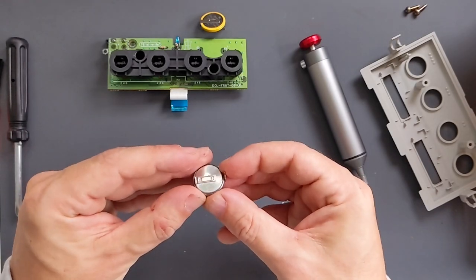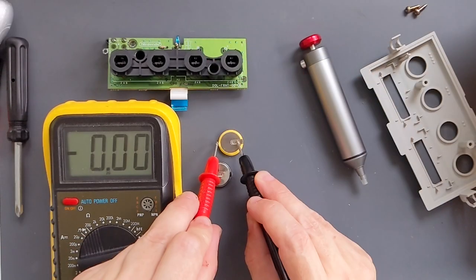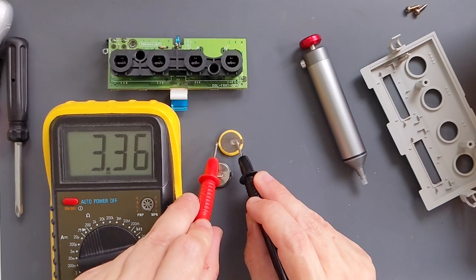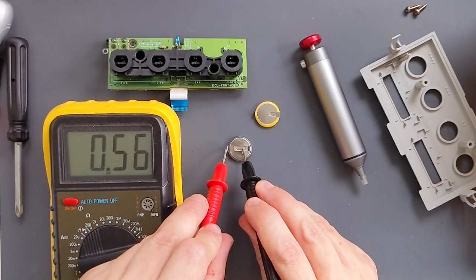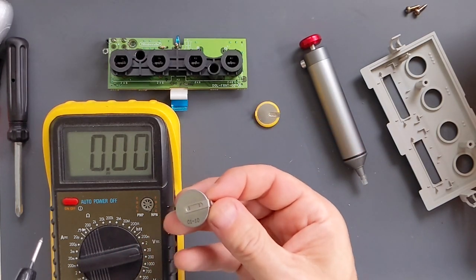Now just before we do anything else I just check that this battery is indeed worn out. I've got my multimeter so that is 0.56 volts so you can see that most of the power has gone from that one. This does indeed need replacing.